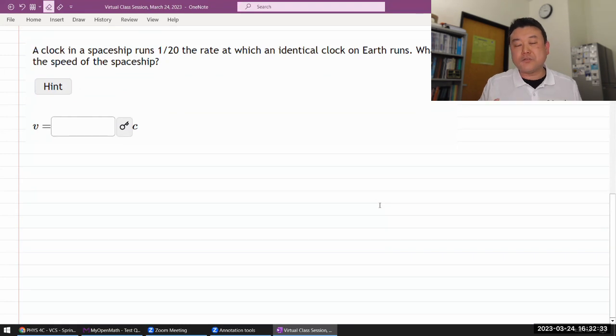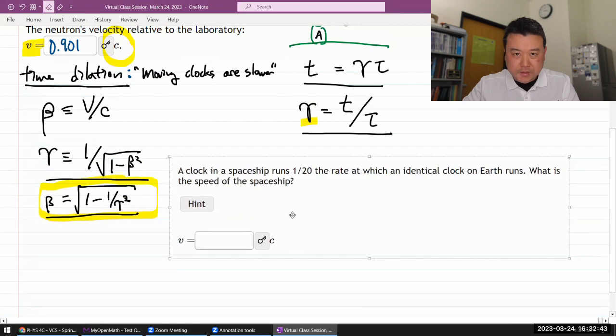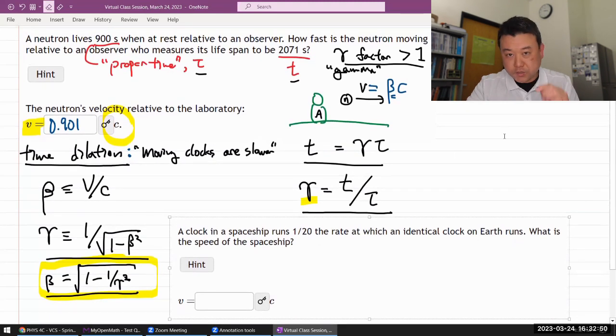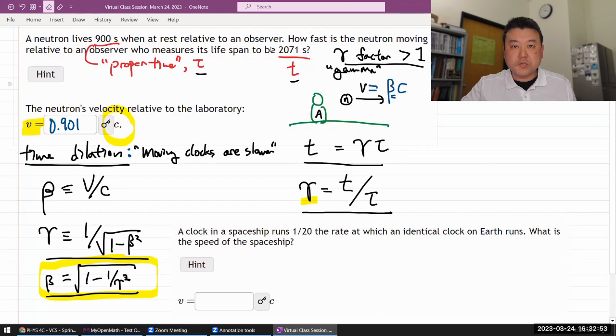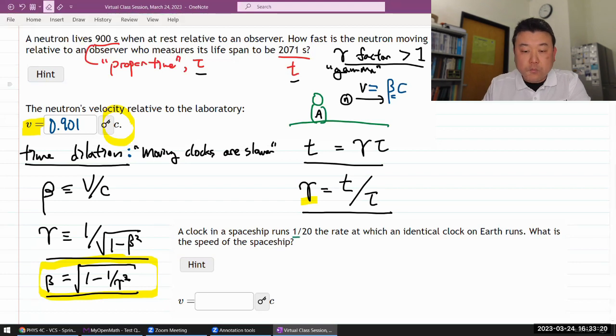This question is very similar to the question we've just done. We've done a time dilation question before, where we've used the information that was given to figure out gamma. And it looks like here, a clock in a spaceship runs 1/20th the rate at which an identical clock on Earth runs. So it feels to me like it's already given us information about gamma already. I guess the thing to be careful about is to understand what it means about 1/20th the rate.